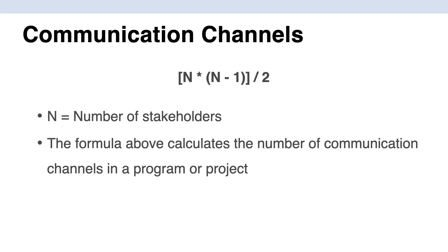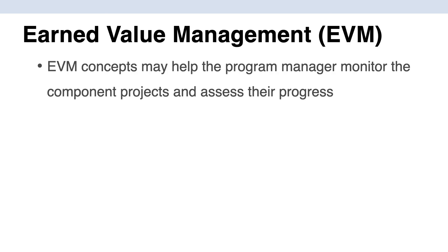Our next formula is communication channels. The way you calculate the number of communication channels is: n × (n − 1) ÷ 2, where n equals the number of stakeholders. For example, if there are five people on your project team: 5 × 4 = 20, divided by 2 = 10. So with five people on your project team there will be 10 possible communication channels.